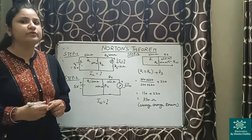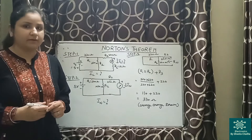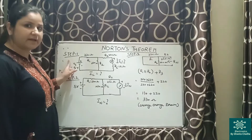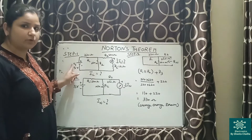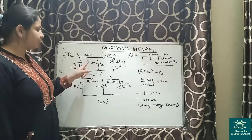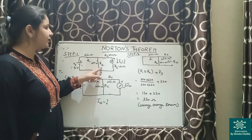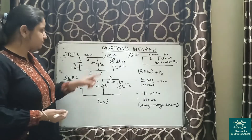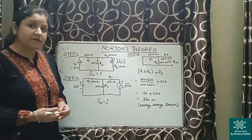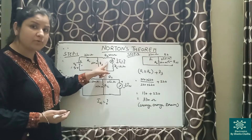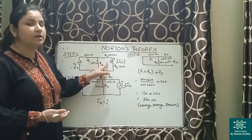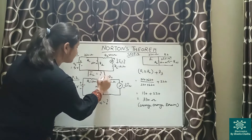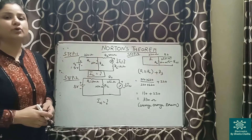Now let us start with the practical — how we are going to perform it. This is our circuit diagram: Vs is our supply voltage of 5 volts, and we have three 220 ohm resistors, plus Rl of 1 kilo ohm. In step number 1, we are supposed to calculate current IL flowing through Rl.